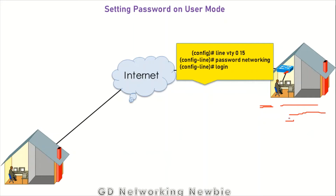For VTY, the command is exactly similar. From global configuration mode, we type: line vty 0 15. VTY stands for Virtual Terminal. With this command we move to the line interface mode. Then we set the password — you can set any password — and then type login. By doing this we will have set a password on the switch for any user accessing it remotely using Telnet.